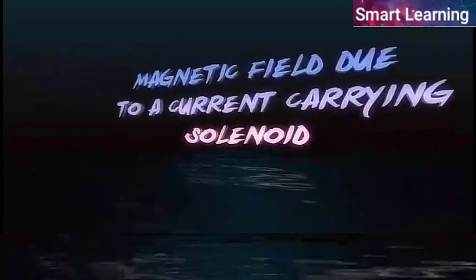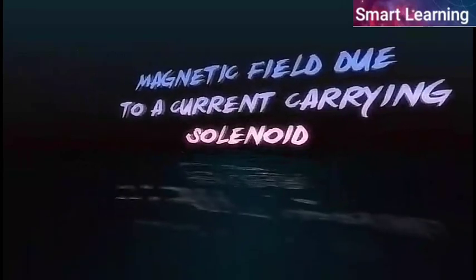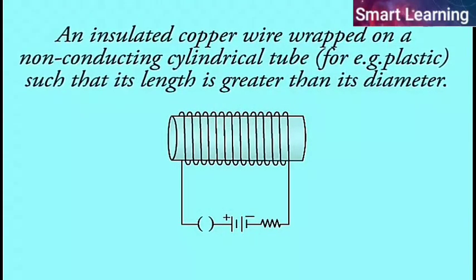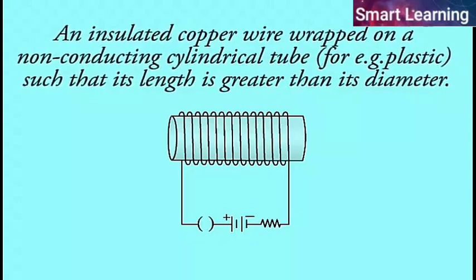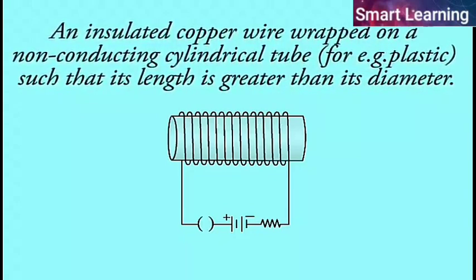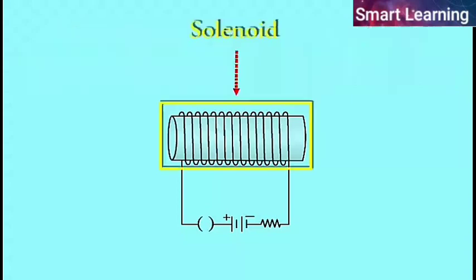Magnetic field due to a current carrying solenoid. An insulated copper wire wrapped on a non-conducting cylindrical tube, for example plastic such that its length is much greater than its diameter is called a solenoid.